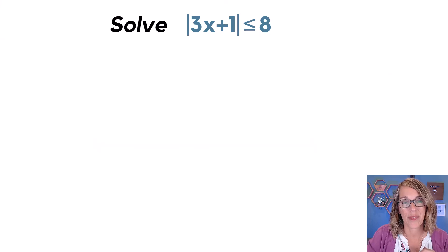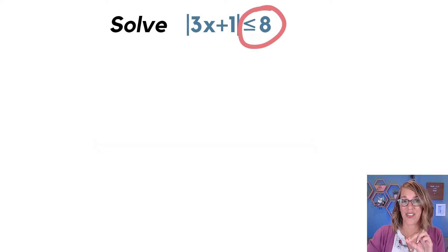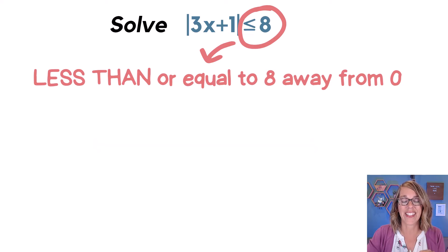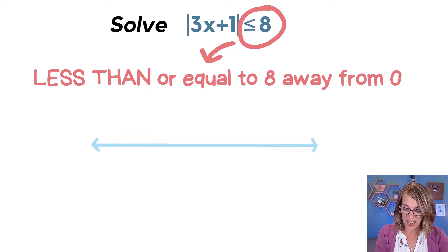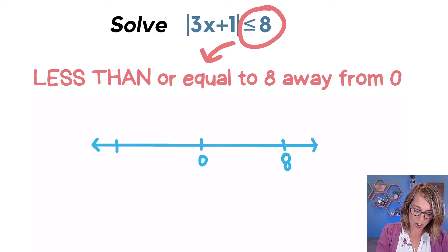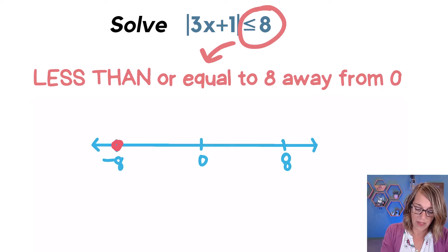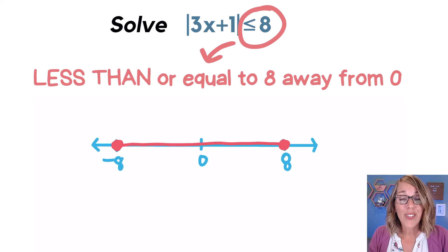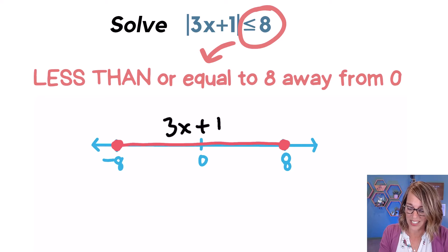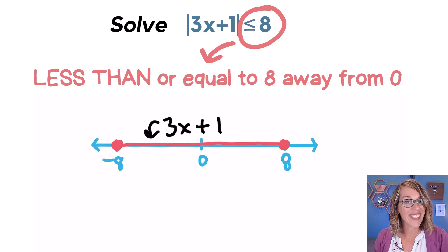In this next one, we have a less than or equal to symbol. I'm still going to interpret that less than or equal to eight as a distance — so 3x plus one is either eight away or less than eight away from zero. On my number line, if I put zero in the middle, I could be as much as eight away on the positive side or negative eight on the negative side. This is going to be everything in between, so 3x plus one can be anywhere from negative eight to positive eight. I'm going to use closed circles because I'm including those values.